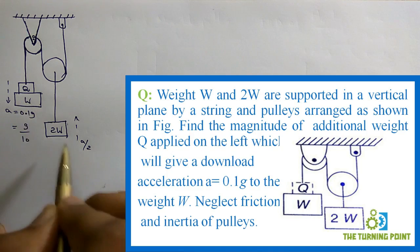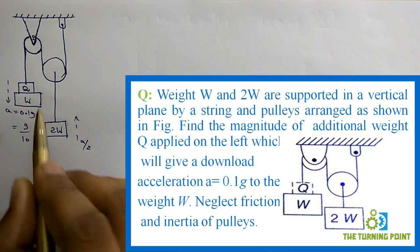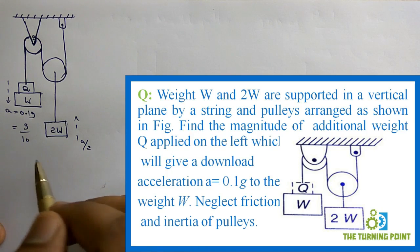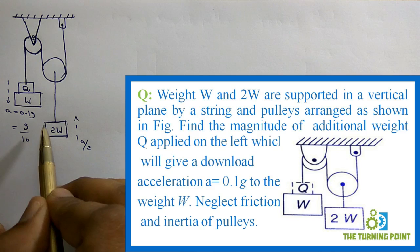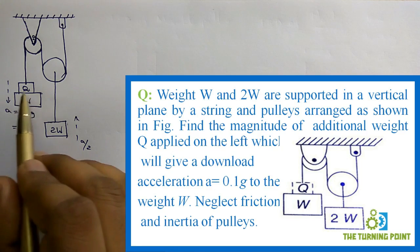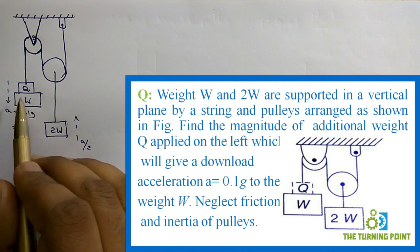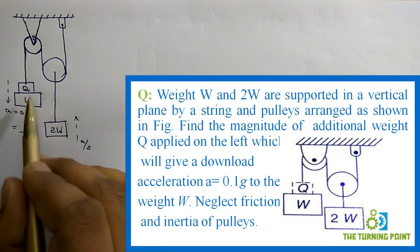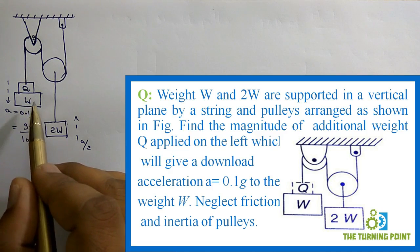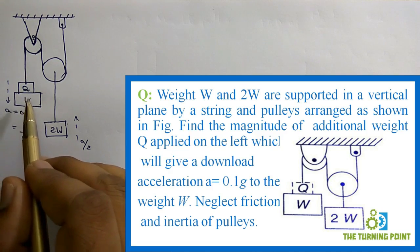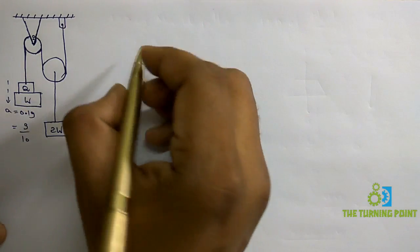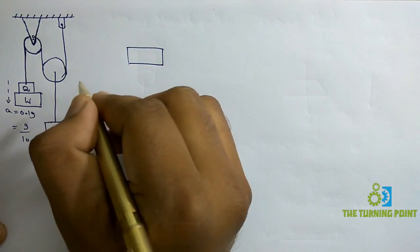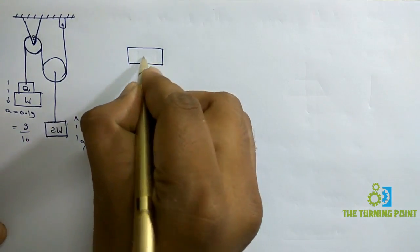The acceleration relation between these two blocks — for reference you can refer to the link in the description. Now, for these two combined blocks which will be in motion, I will first draw the free body diagram treating them as a single unit. Considering the block as a combination of W and Q together, the weight acts vertically downwards.